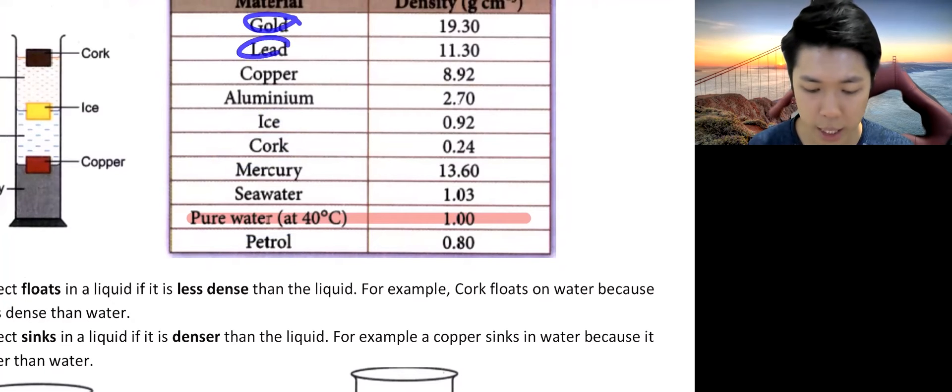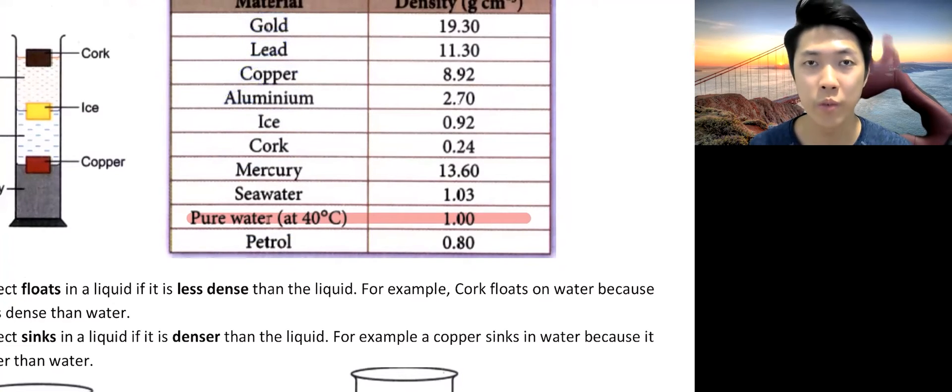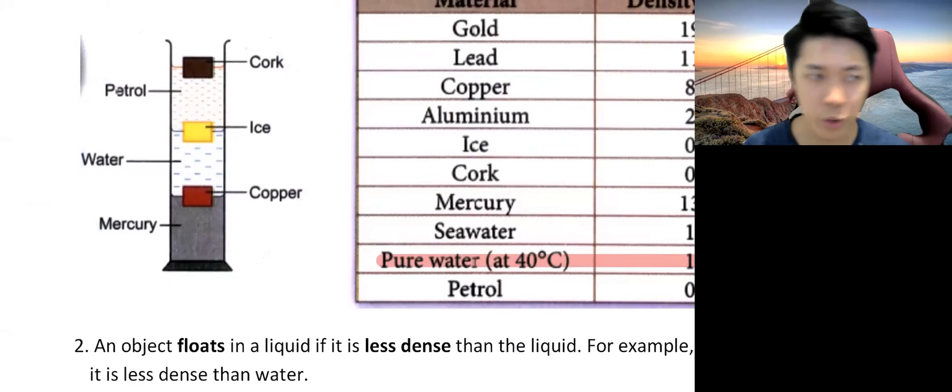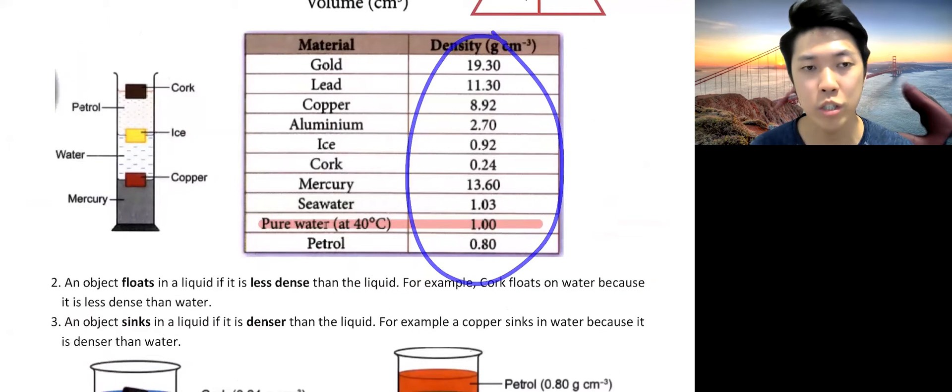For example, like gold, lead, copper, aluminium, and so on. So this is the example of a picture to show you things that float or sink above or below each other based on the numbers that we have arranged.